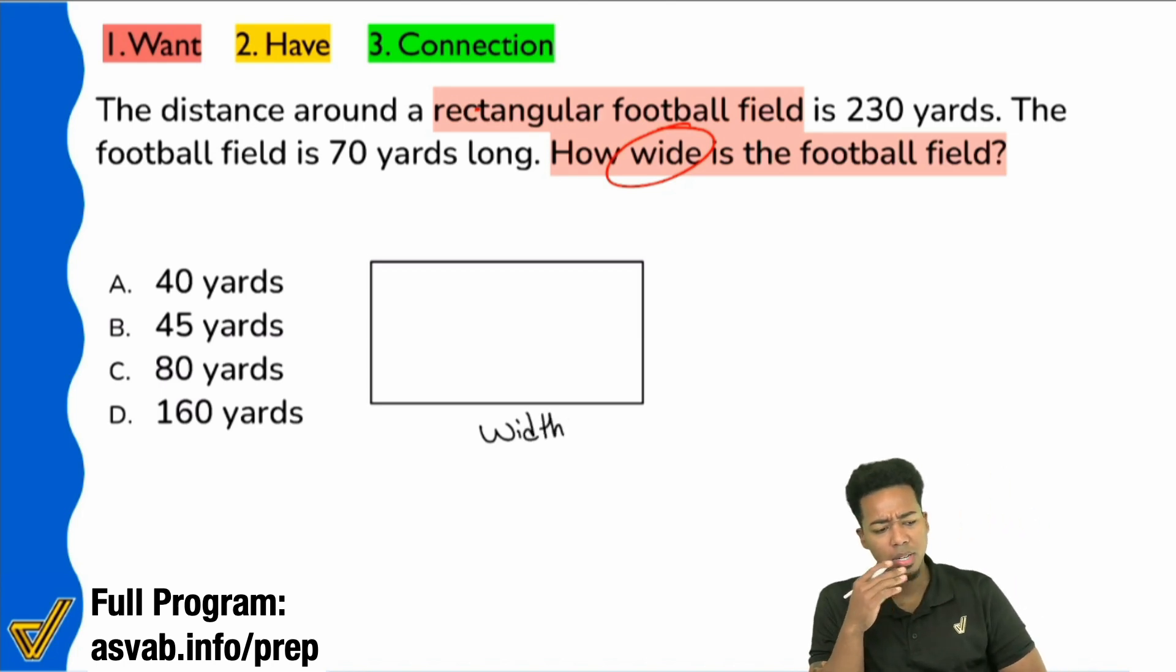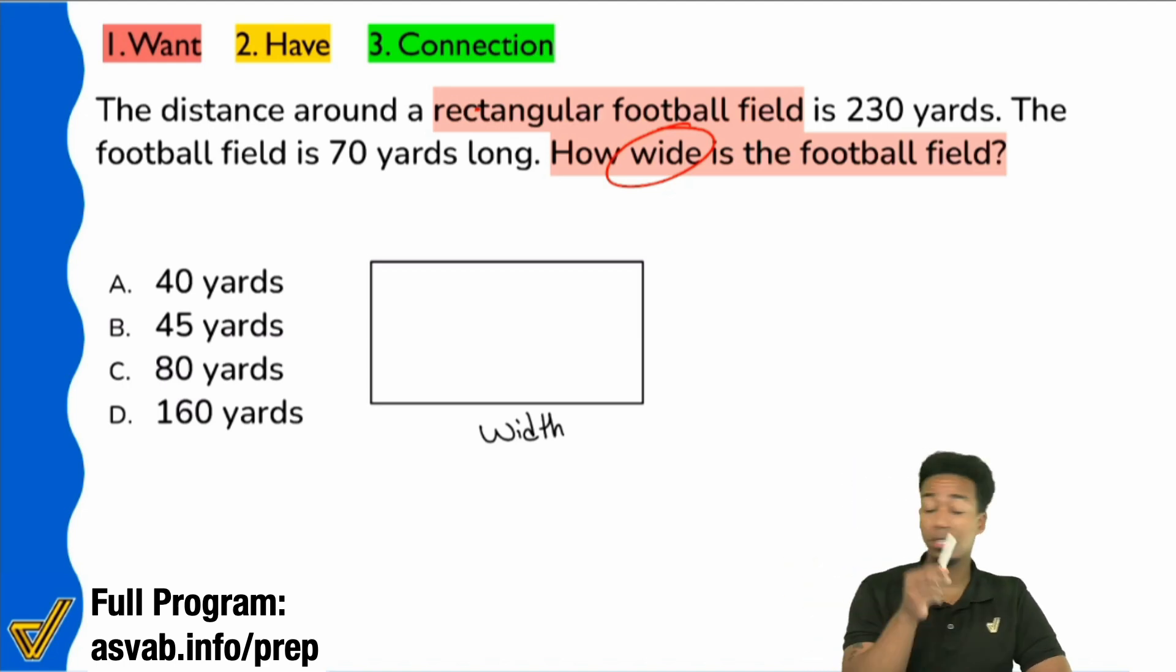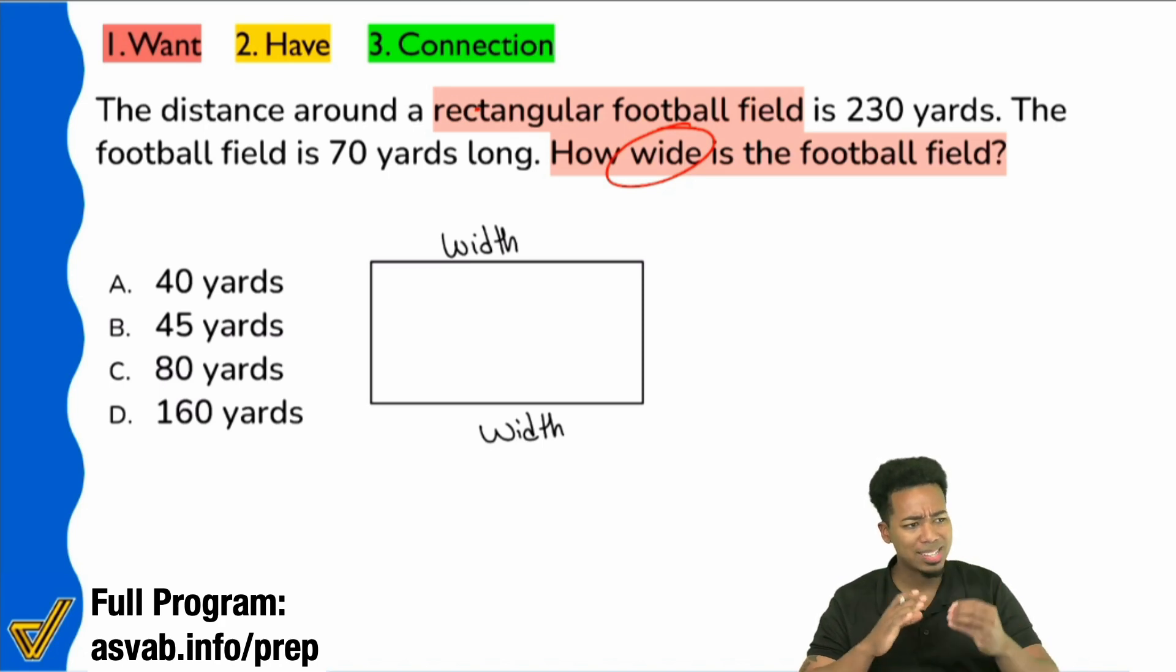Just a quick question. When it comes to rectangles, if the bottom there is called the width, what else would be the width? Right, the top. Remember, with rectangles, the opposite sides are the same. So if the bottom is the width, the top is the width as well.